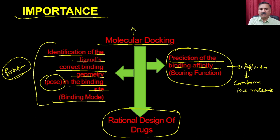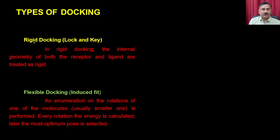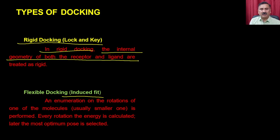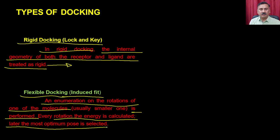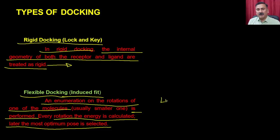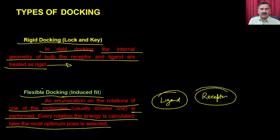Molecular docking can be performed in two different modes. You can follow the lock-and-key model or the induced-fit model, meaning you can do rigid body docking or flexible docking. In rigid docking, the internal geometry of both the receptor and ligand are treated as rigid — you follow the philosophy of the lock-and-key model. In flexible docking, you follow the induced-fit model, where a rotation of one of the molecules is performed, the energy is calculated for every rotation, and the most optimal pose is selected. Majority of the time it is the ligand that is made flexible.